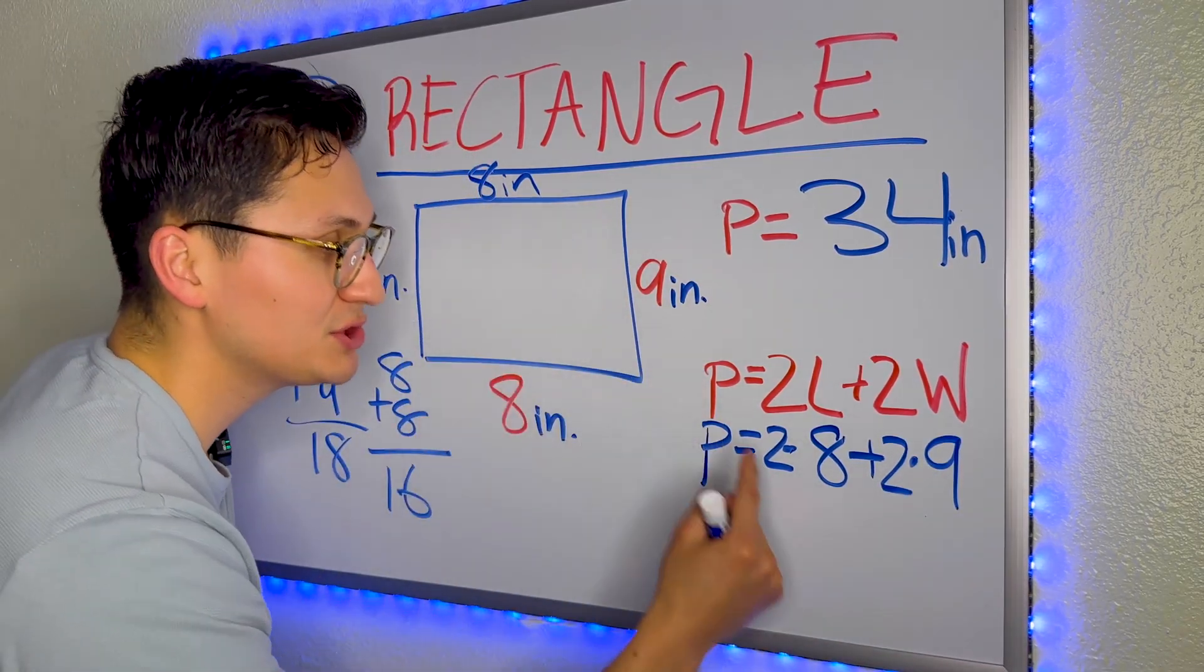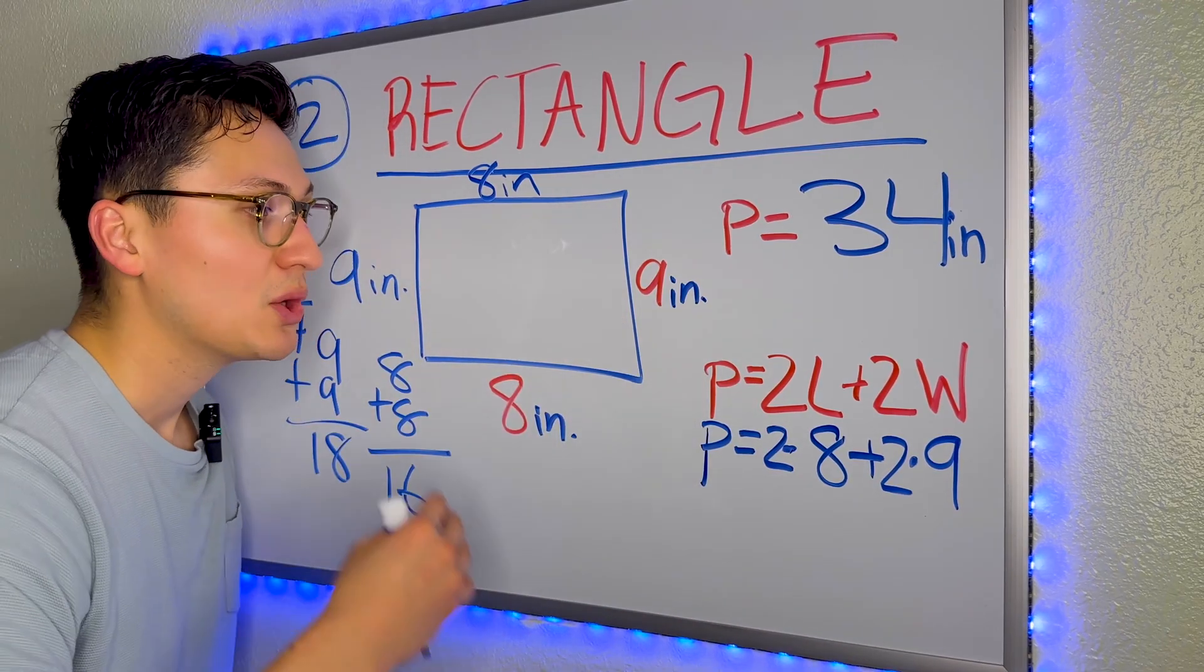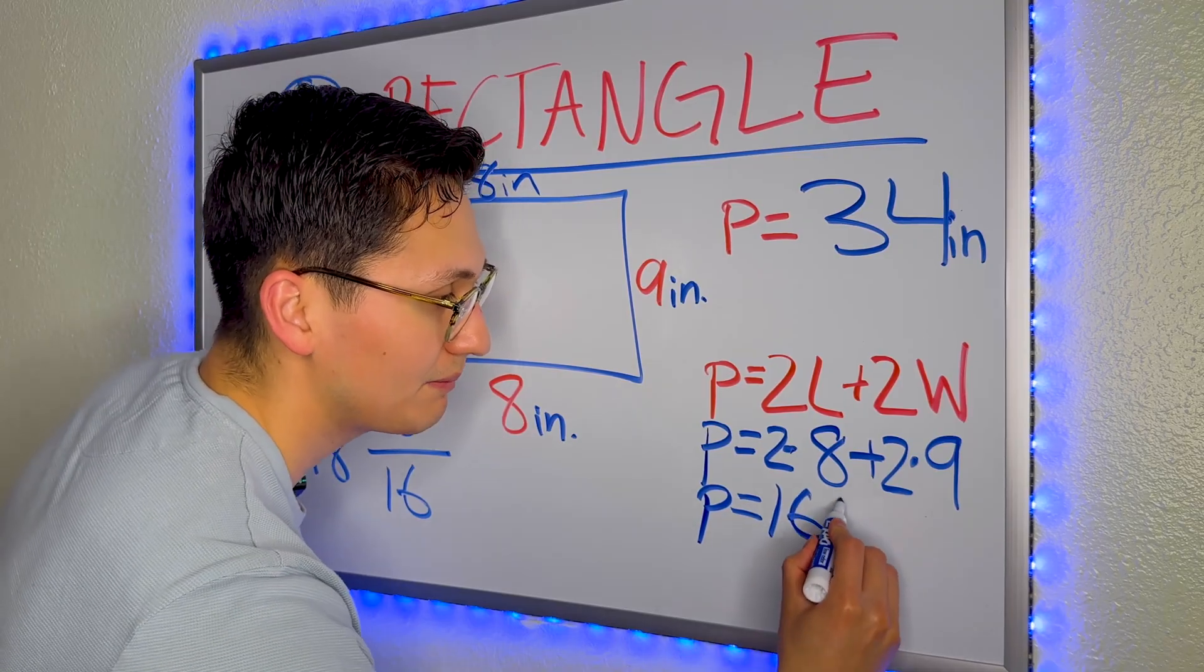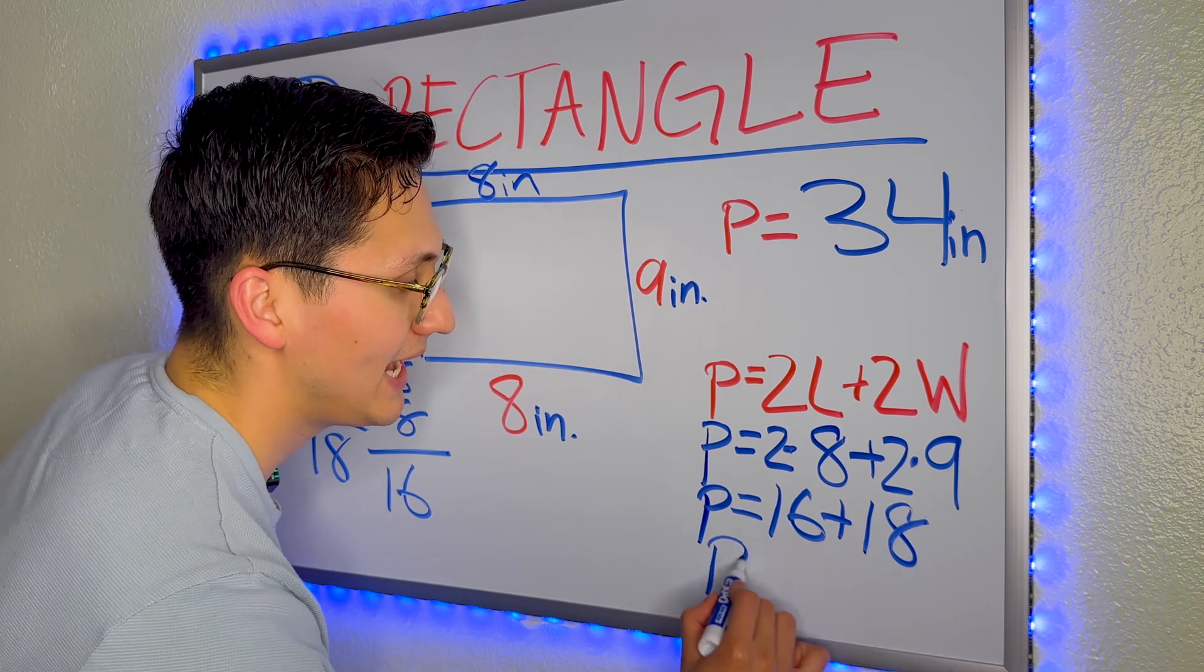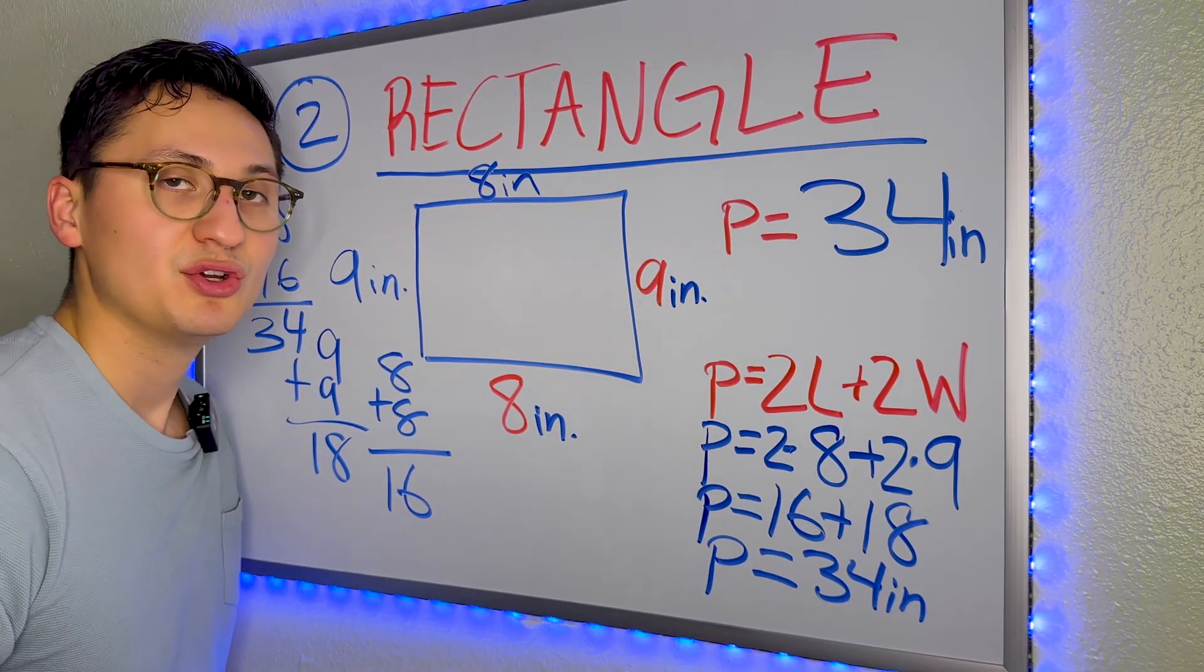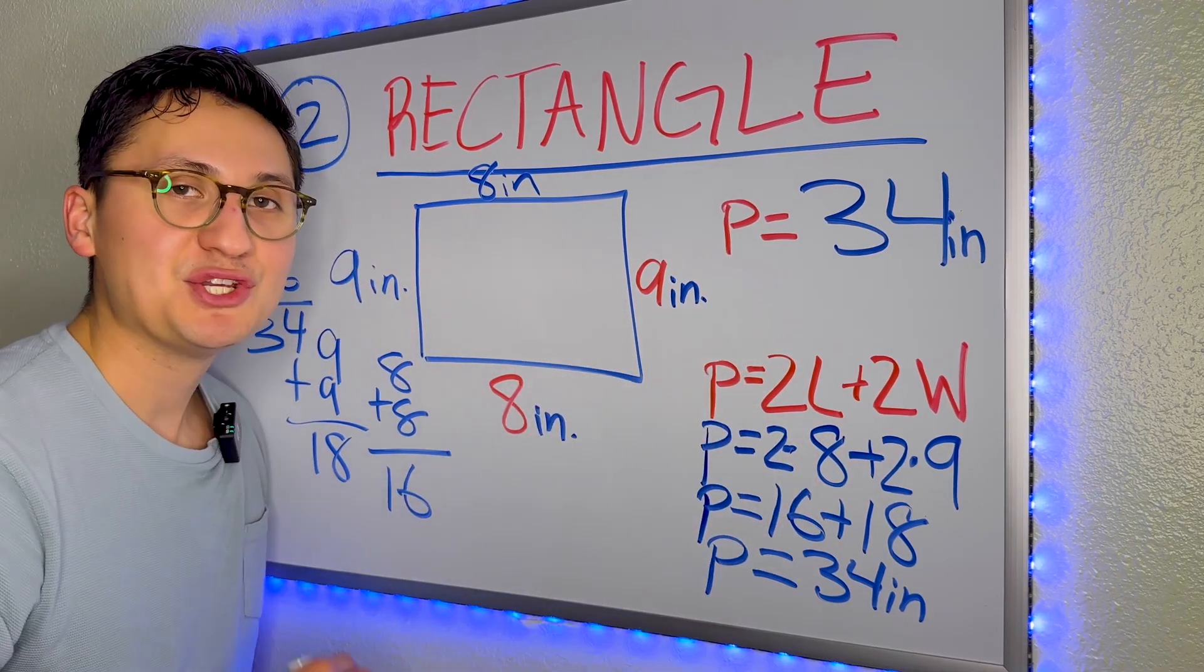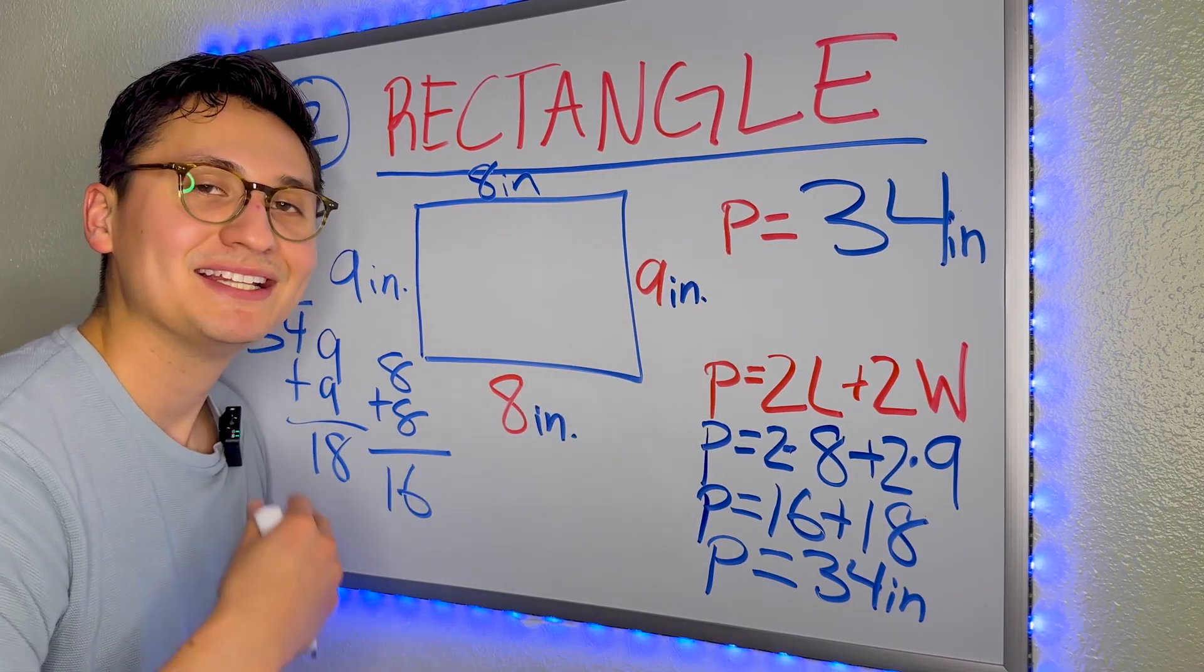And when we have multiplication and addition, and we apply the PEMDAS principle, we know that multiplication comes first. So we do two times eight is 16 plus two times nine, which is 18. And that will give us 34 inches. So you can either just simply add all the numbers and you get the answer or you can do the formula and you'll get to the same answer. Two roads to the same destination.